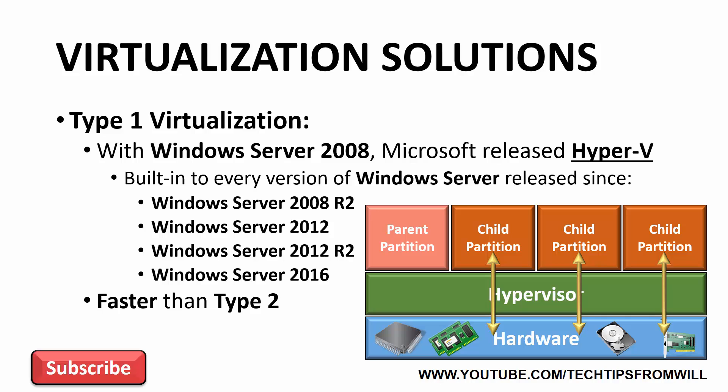When implementing virtualization in a business environment, you should opt for a Type 1 virtualization solution like Hyper-V in order to get the best performance out of your virtual machines. Type 2 solutions are best used for experimental purposes and for testing. That covers the different virtualization architectures available in today's marketplace. Hopefully now you have a better understanding of how Hyper-V works under the hood.